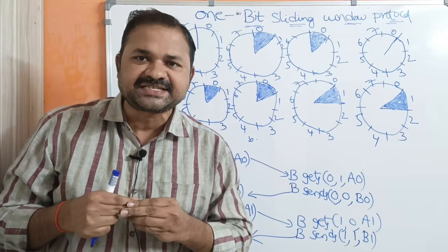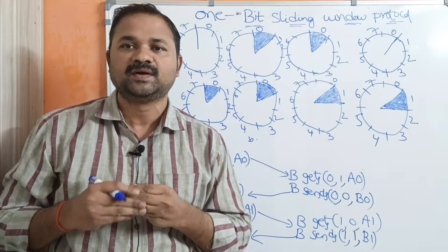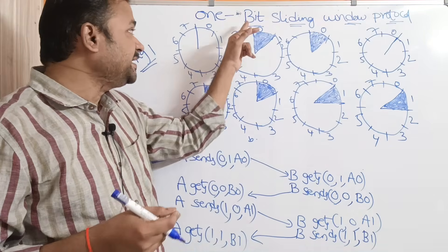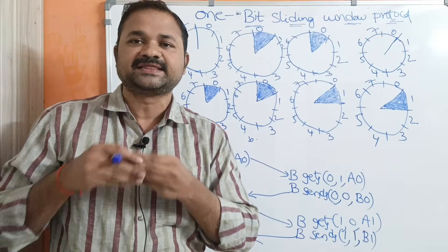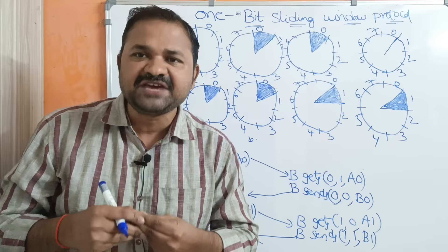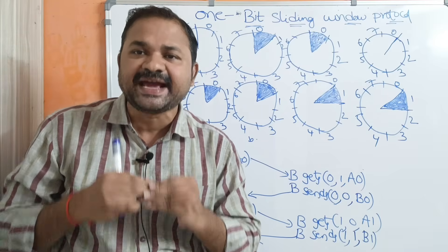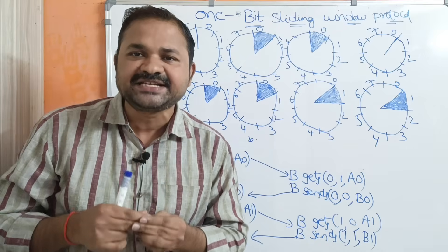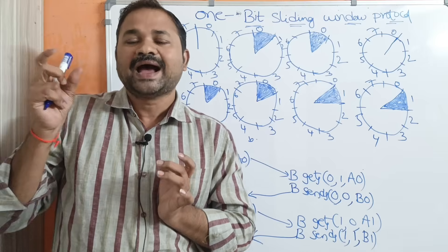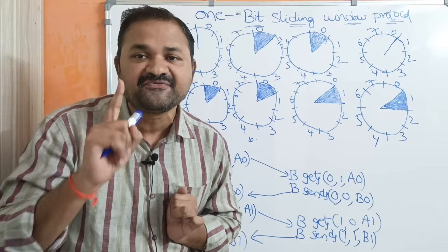Let us discuss the 1-bit sliding window protocol. The name itself specifies the meaning: 1 bit means the sender window size as well as the receiver window size is 1. That means at a time the sender can send only one frame to the receiver, and the receiver can also receive only one frame from the sender.